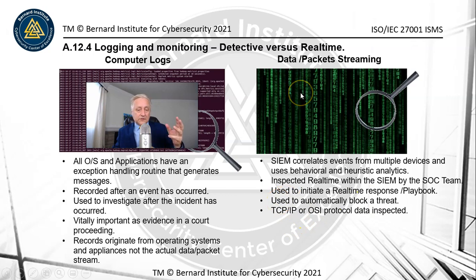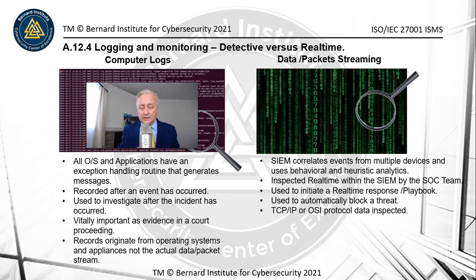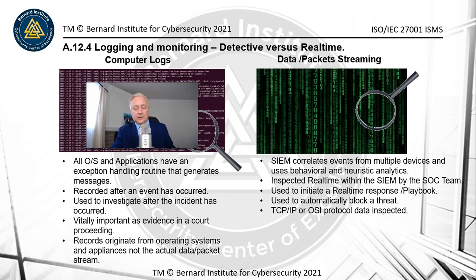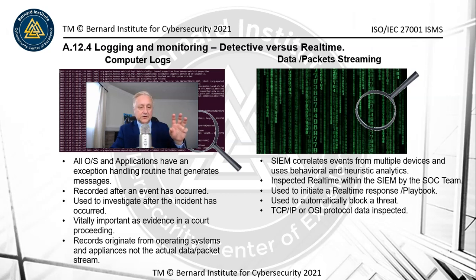Monitoring streams also allows you to block threats. There are ASAs — adaptive security appliances combining firewall and intrusion prevention — as well as individual IPS appliances. When they detect a problem they can automatically throw a block and stop it in its tracks before a Trojan gets released or a ransomware attack occurs.